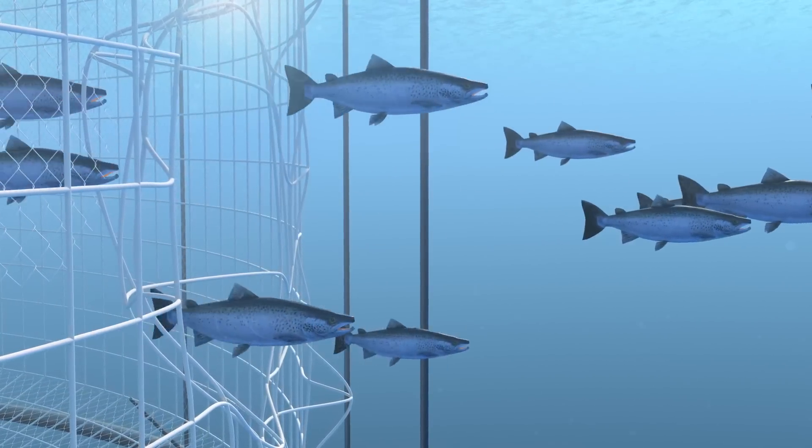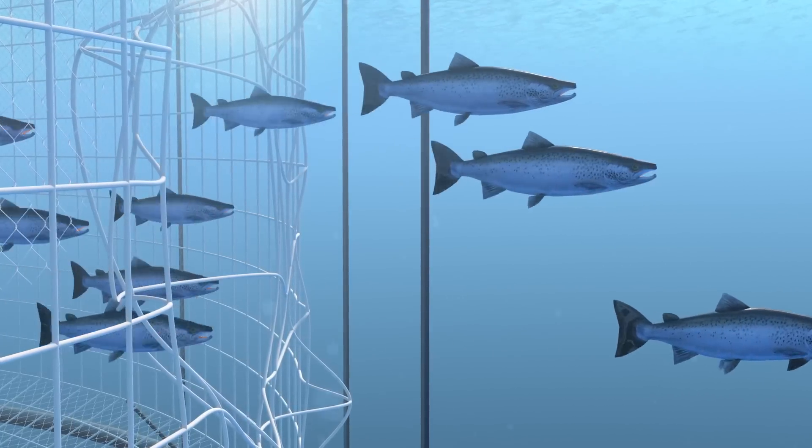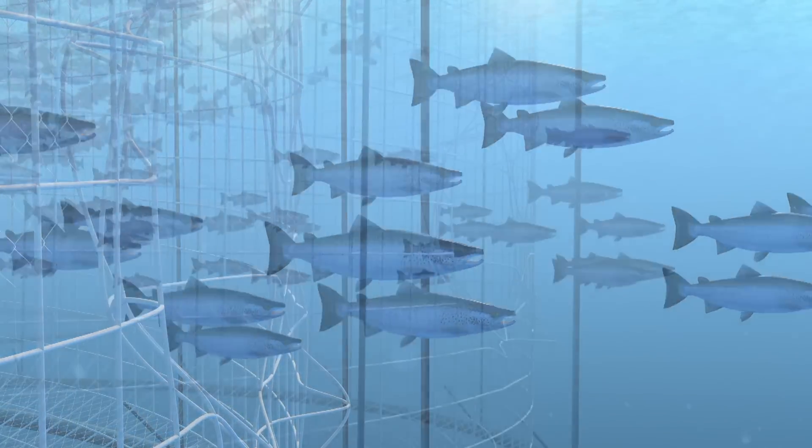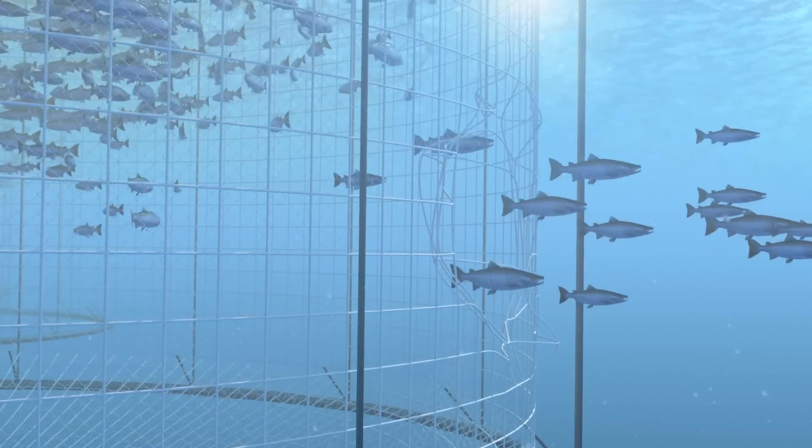When farmed fish escape, they can interbreed with wild fish populations, compete for food, prey on native species, and transmit disease.